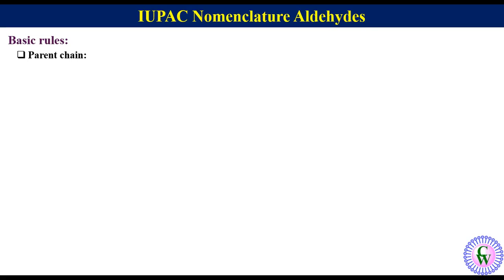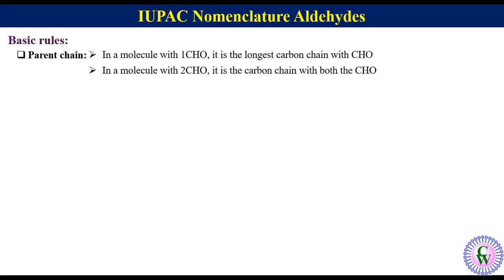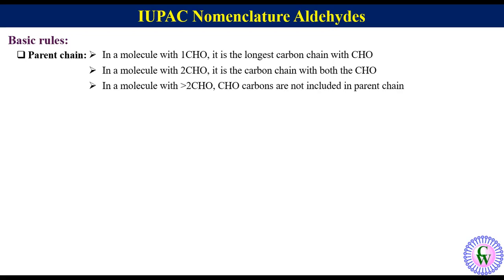The first rule is regarding the parent chain. In a molecule with one CHO, it is the longest carbon chain including CHO. In a molecule with two CHOs, it is the carbon chain including both CHOs. In a molecule with greater than two CHOs, the CHO carbons are not included in the parent chain.